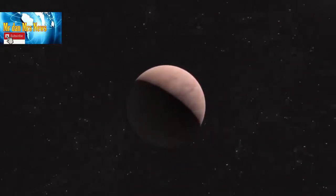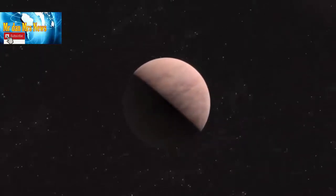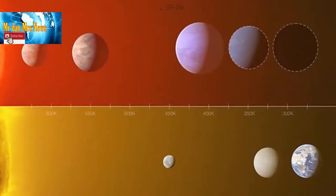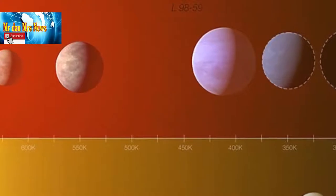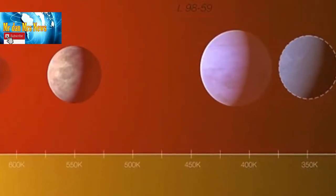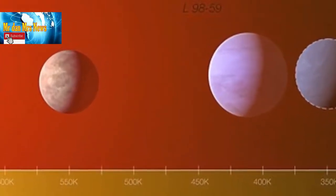Selama pengamatan baru terhadap sistem ini, para astronom menentukan bahwa tiga planet memiliki beberapa jenis kandungan air. Dua planet yang paling dekat dengan bintang itu kemungkinan kering dan berbatu serta hanya memiliki sedikit air.